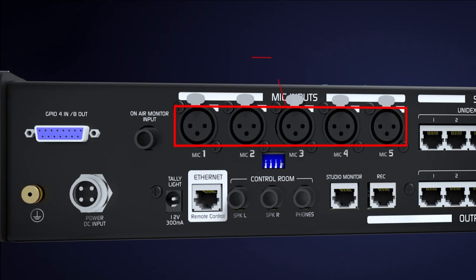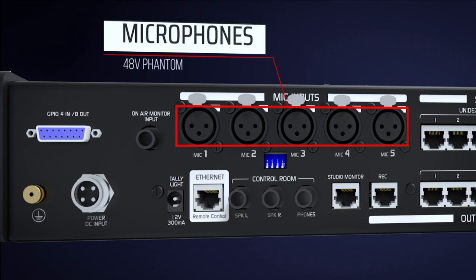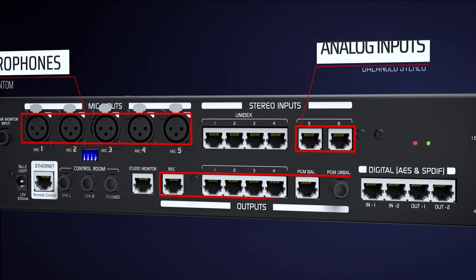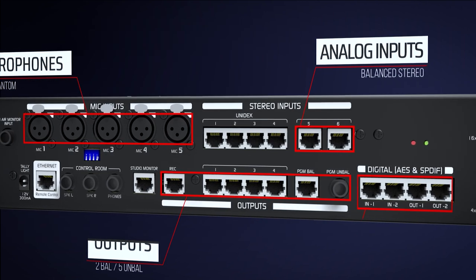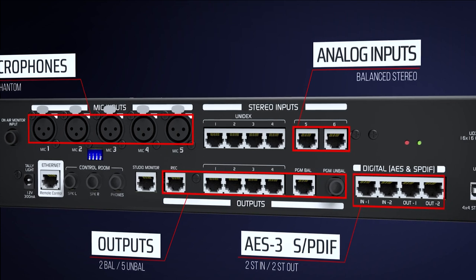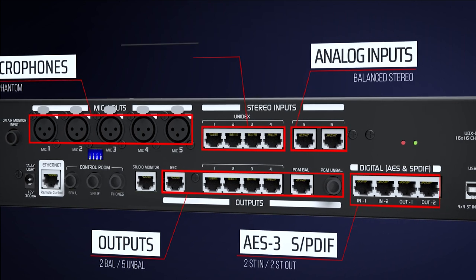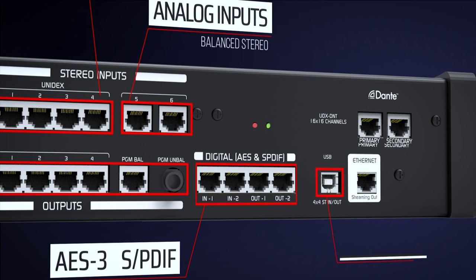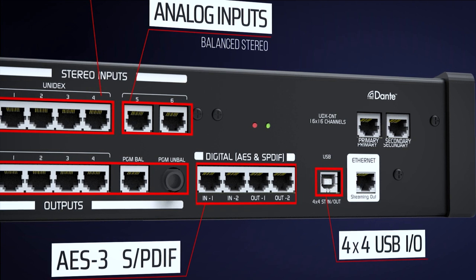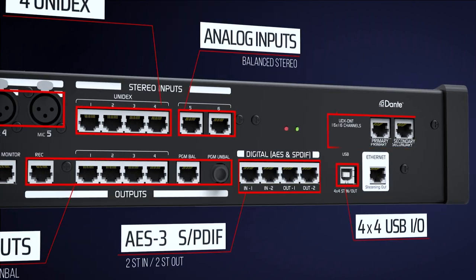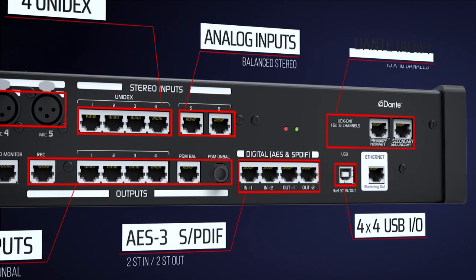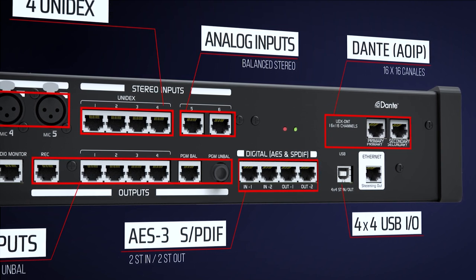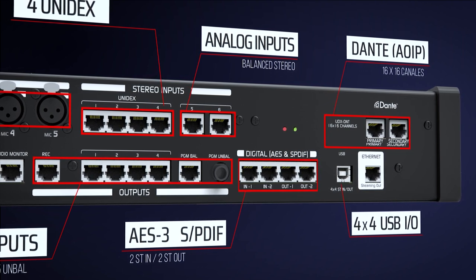The Unidex UX-18 features 5 microphone inputs, analog and digital line inputs and outputs, Unidex multipurpose inputs, and a USB audio port supporting 4x4 stereo I/O. Optionally, it can be equipped with networking audio, powered by Dante.